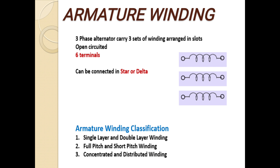Armature winding classification has three different types: single layer winding, double layer winding, full pitch and short pitch winding, and concentrated and distributed winding.